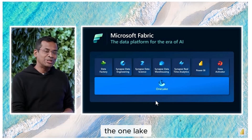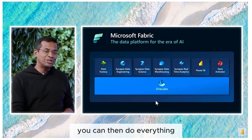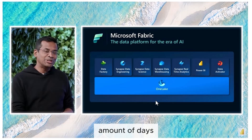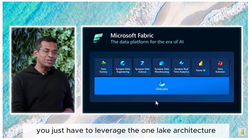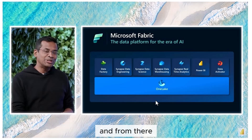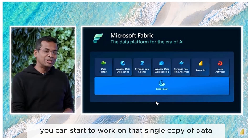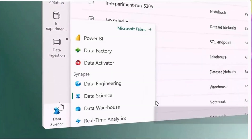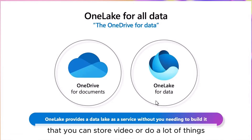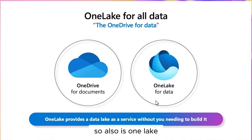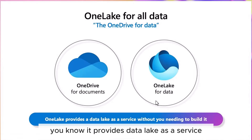All your data are just connected through One Lake, and from there you can do everything. You don't have to take that long period of days or months looking for vendors and services to do your integration. You just leverage the One Lake architecture, which brings all of them together as your data lake. From there you can start to work on a single copy of data. One Lake is the OneDrive for data — just like OneDrive in Microsoft 365, where you can store videos, audio, files for your day-to-day activity, One Lake is the same but for data. It provides data lake as a service.